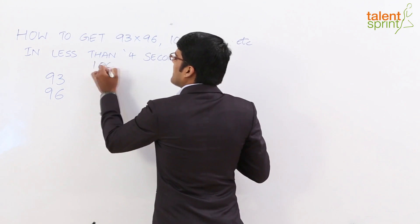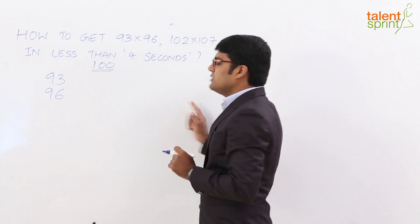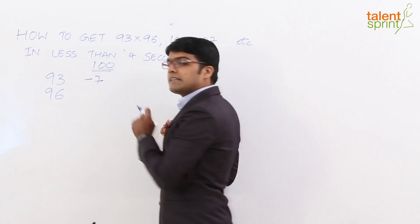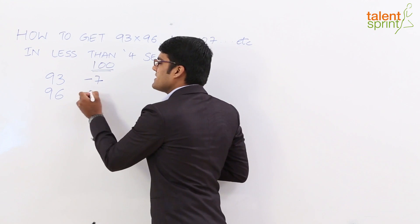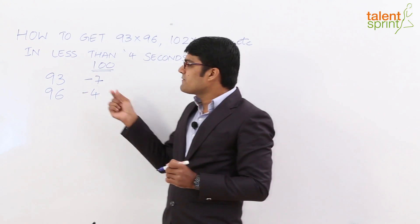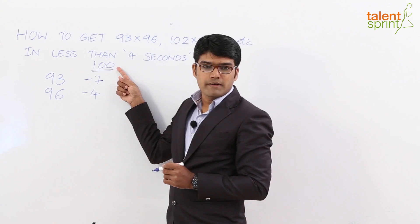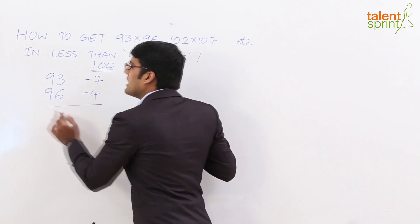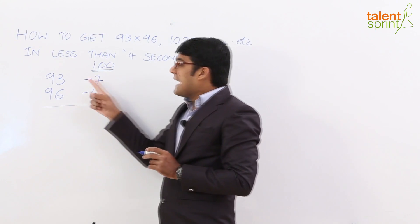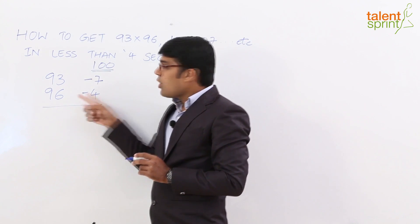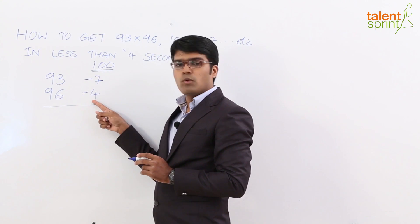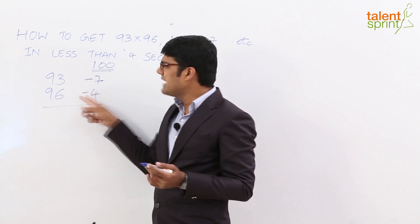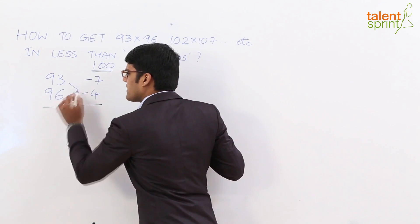For example, if our base here is 100, you see that 93 is 7 less than 100. 100 minus 7 gives us 93. Similarly, 100 minus 4 gives us 96. So all we need to do here is find out the distance of the numbers from the base value of 100. So 93 is 100 minus 7 and 96 is 100 minus 4. Now what do we do? Next step, take the cross difference that is either take the difference of 93 and 4 or 96 and 7. For example, 93 minus 4 is 89 or for that matter 96 minus 7 is also 89. So you can take any one of these cross differences. So 93 minus 4 gives us 89.